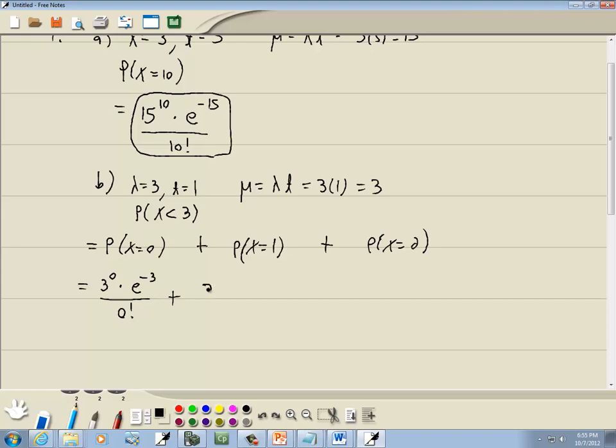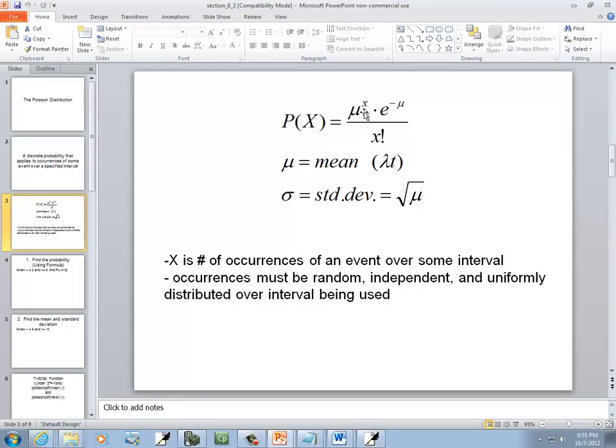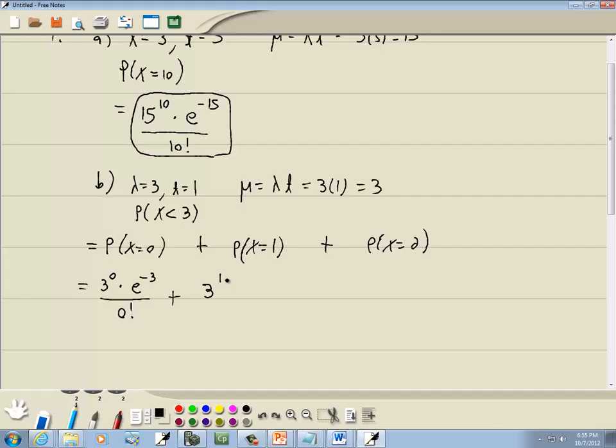And then I'll have 3, and we're just changing the X value. 3 to the first times E to the negative 3, over 1 factorial. And plus 3 squared times E to the negative 3, over 2 factorial. And that's our setup.